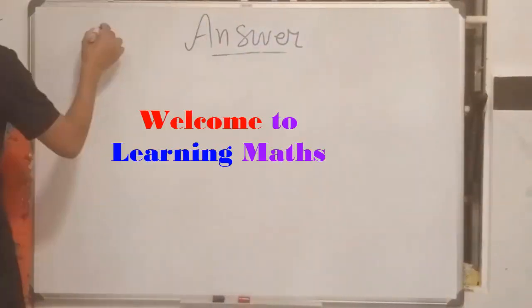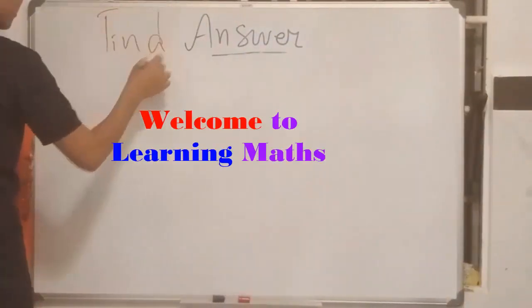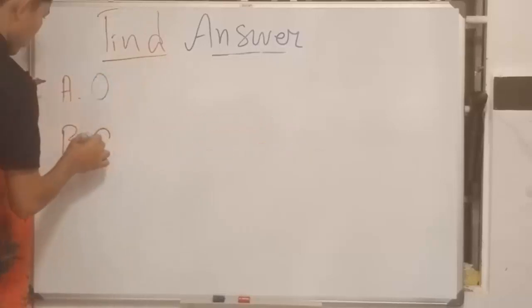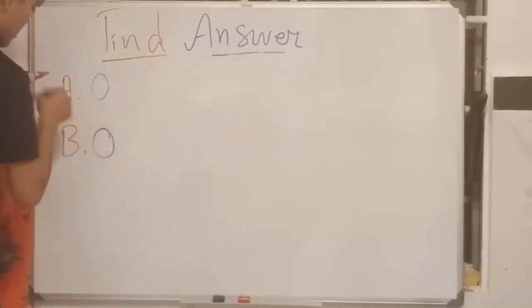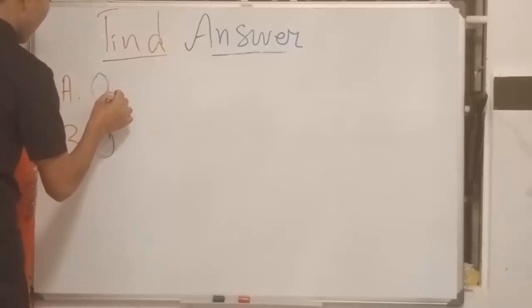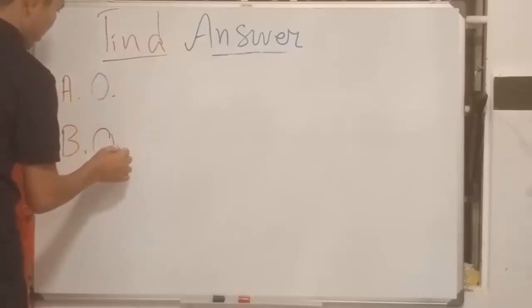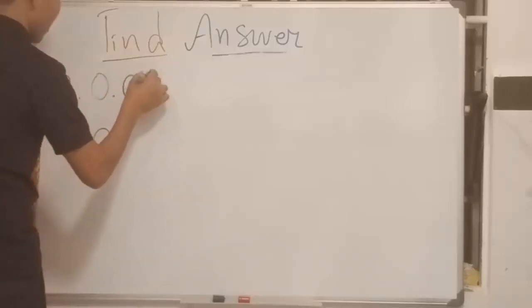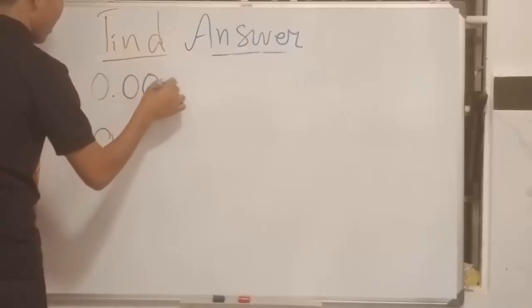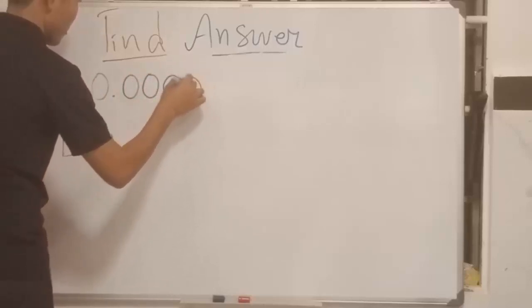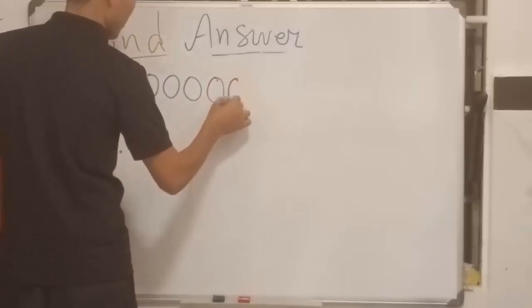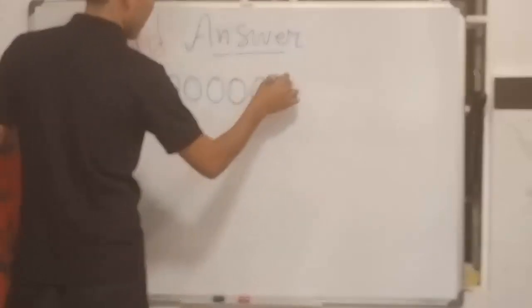Hello together, happy to see you again. Today we show you about smart mathematics solving. About this topic: A and B. So now, about A: 0.00005060708090 10 11.